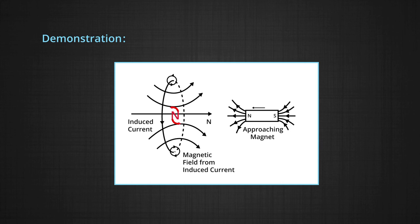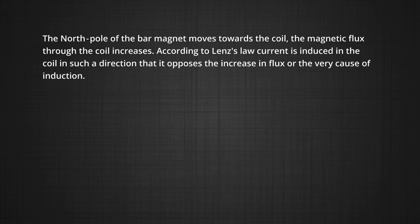Another point to observe is that if the field due to the induced current is in the right direction, then this side of the loop must be inducing a north polarity. So we conclude that as the north pole of the bar magnet moves towards the coil, the magnetic flux through the coil increases. According to Lenz's law, current is induced in the coil in such a direction that it opposes the increase in flux — the very cause of induction.